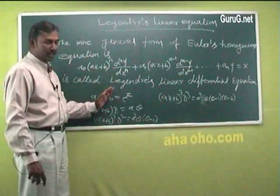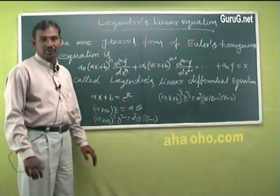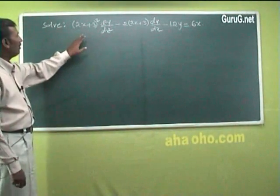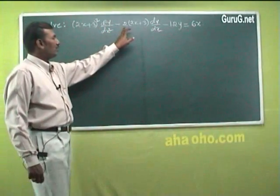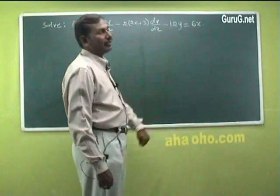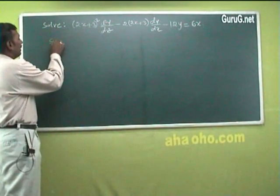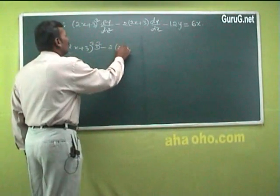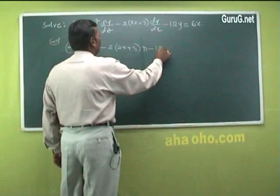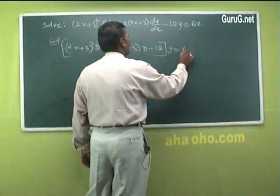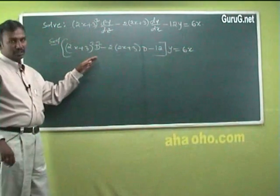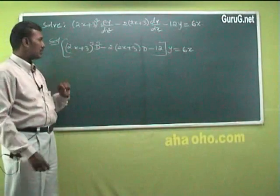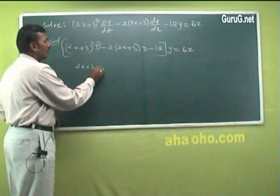Using these results, the differential equation can be converted into a differential equation with constant coefficients, and then we apply the usual method for solving it. Now consider Problem 1: solve (2x+3)²(d²y/dx²) − 2(2x+3)(dy/dx) − 12y = 6x. This is of the form of a Legendre linear equation and can be converted using the transformation 2x+3 = eᶻ.